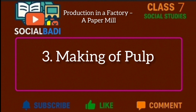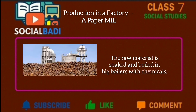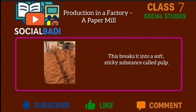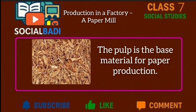Making of pulp: The raw material is soaked and boiled in big boilers with chemicals. This breaks it into a soft sticky substance called pulp. The pulp is the base material for paper production.